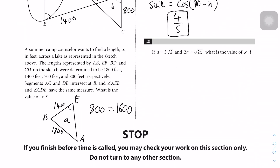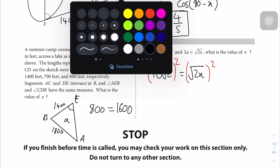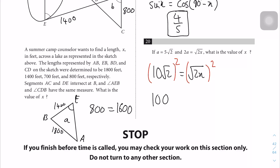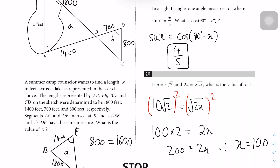Question 20: a = 5√2, and 2a = √(2x). So 2a = 10√2 = √(2x). Squaring both sides: 100 × 2 = 2x, so 200 = 2x, therefore x = 100.